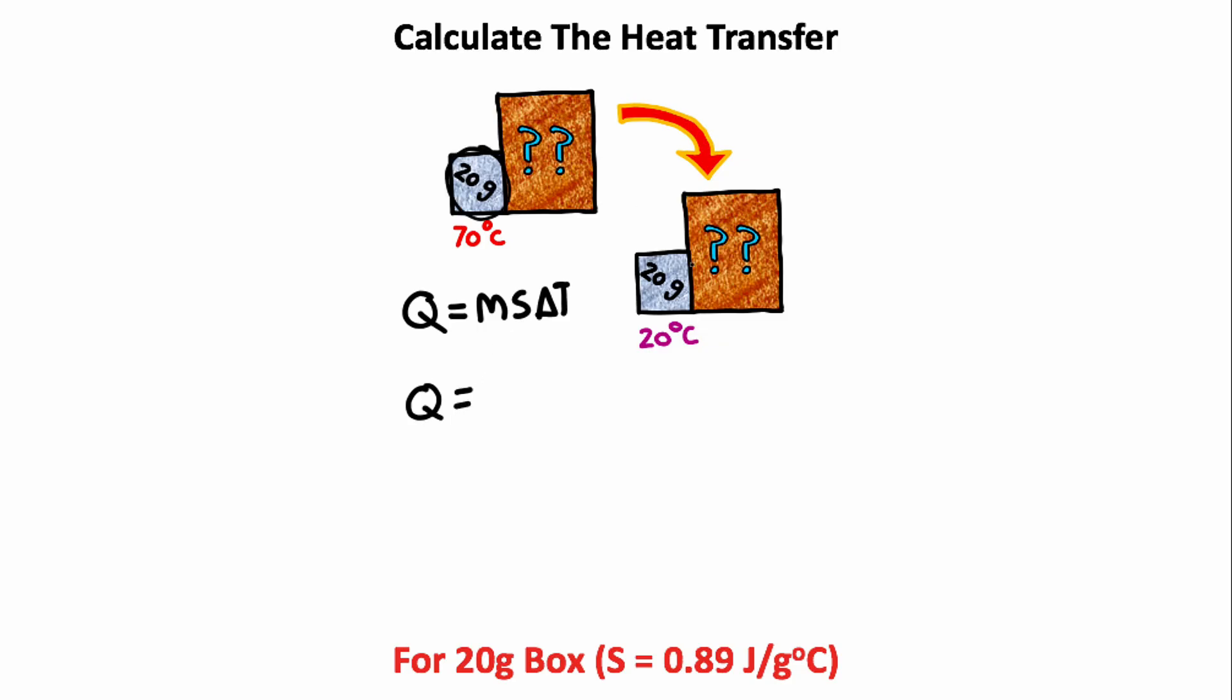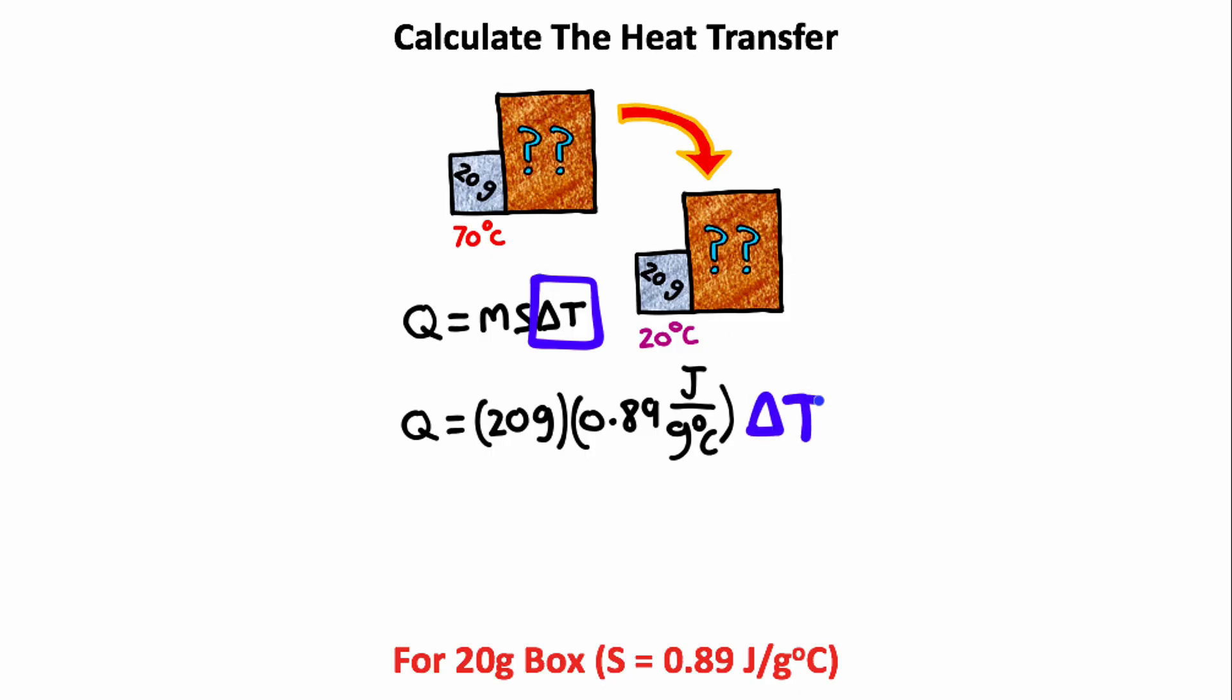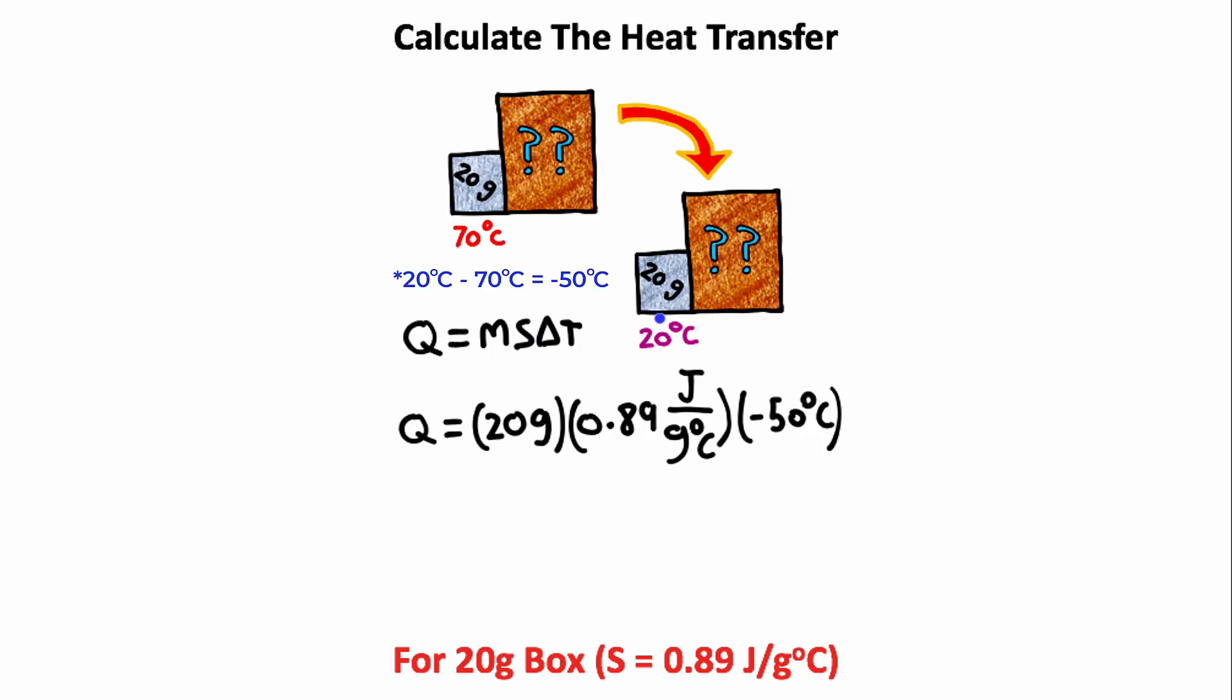What I'm going to do is plug in the variables that we have. The mass is given to us as 20 grams. The specific heat capacity is given to us in the problem, which is the specific heat capacity for aluminum. The last thing I need to do is plug in the change in temperature, and the change in temperature is simply going to be the final temperature minus the initial temperature. We can cancel the unit of grams and the degrees Celsius, leaving us with just joules. And 20 times 0.89 times negative 50 will give you a value of negative 890 joules of heat. So this is the answer to the problem.